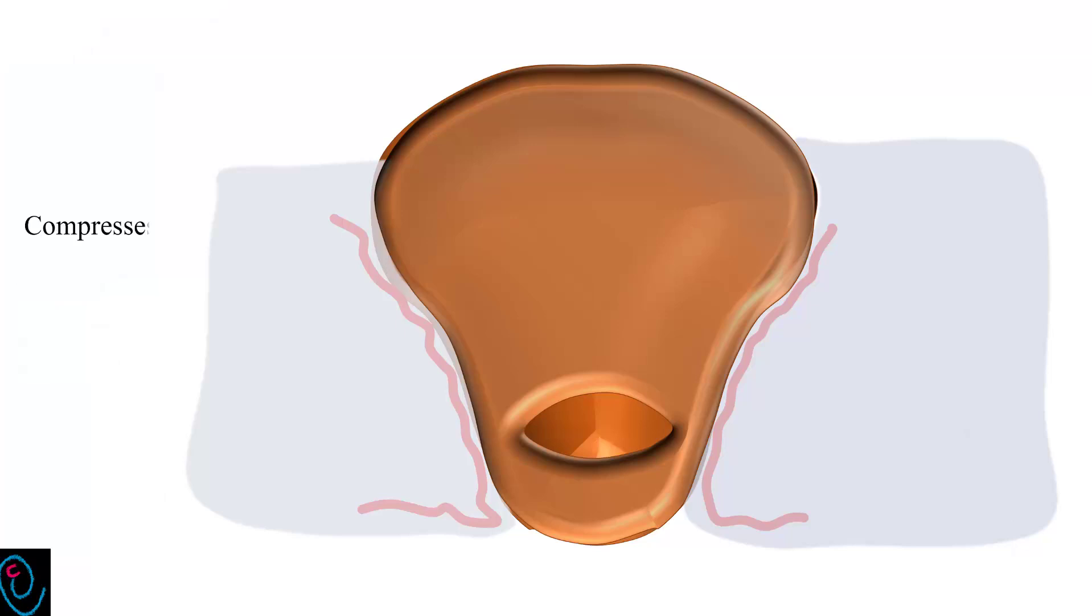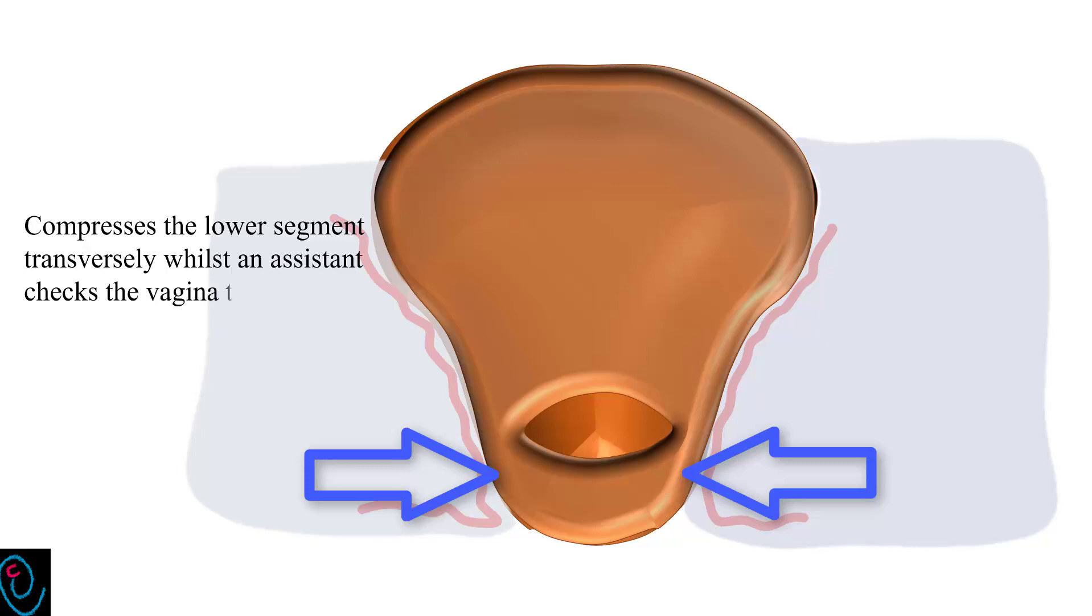As a test of compliance, compress the lower segment transversely while an assistant checks the vagina to make sure that bleeding is controlled.